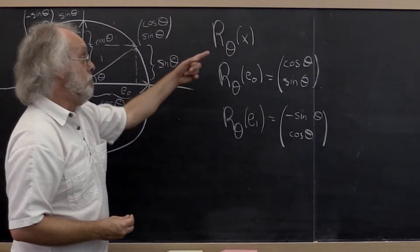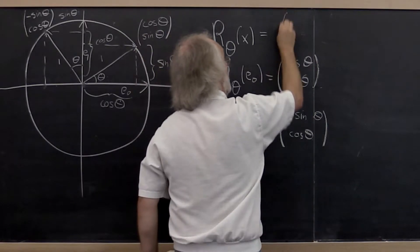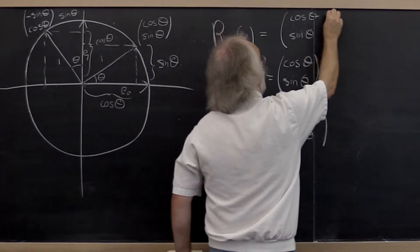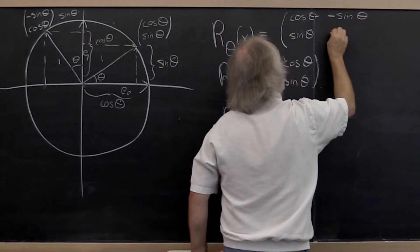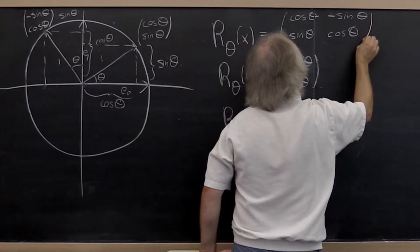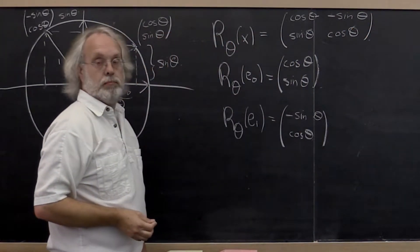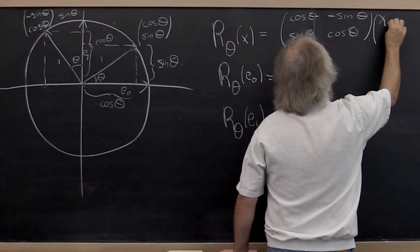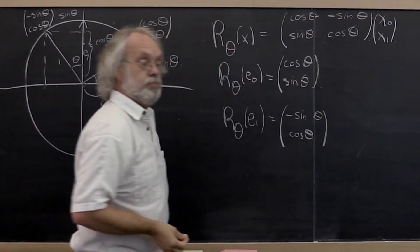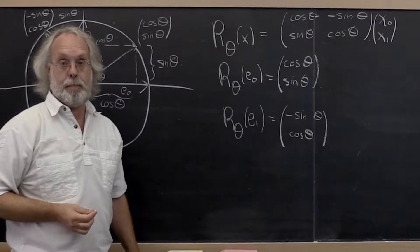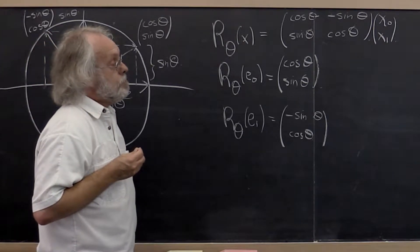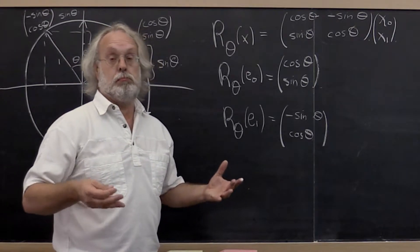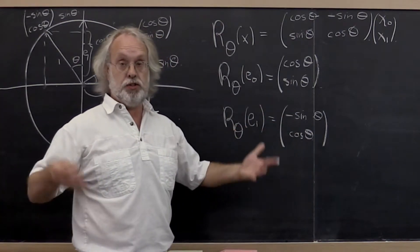So the rotation matrix is given by: [[cos(theta), -sin(theta)], [sin(theta), cos(theta)]], which multiplies the vector x. Now, is this a unitary matrix? We've already argued that it should be, but let's check it anyway.